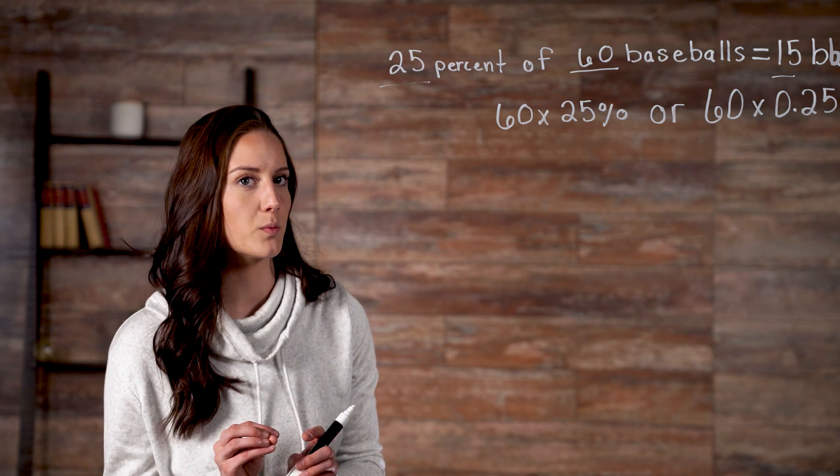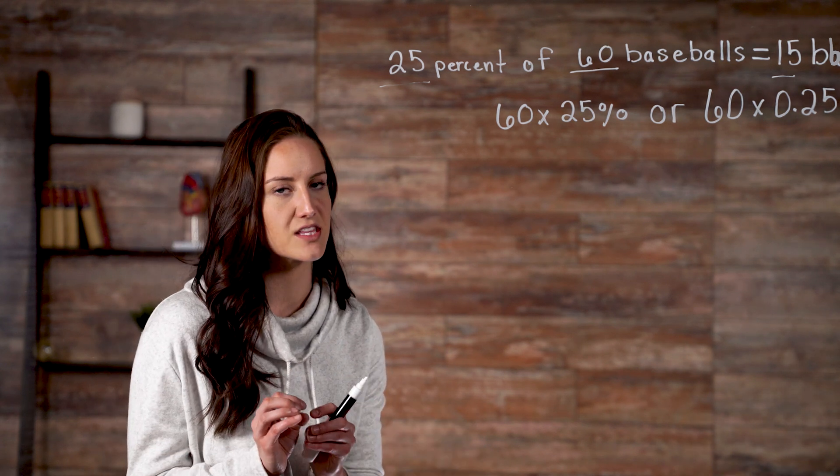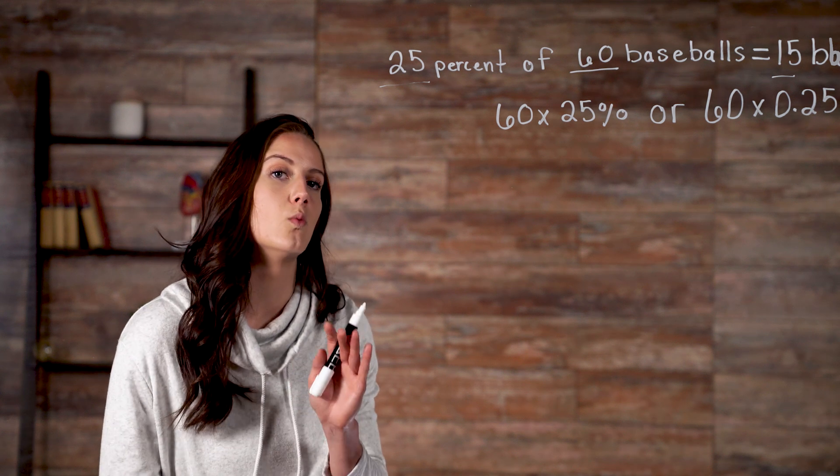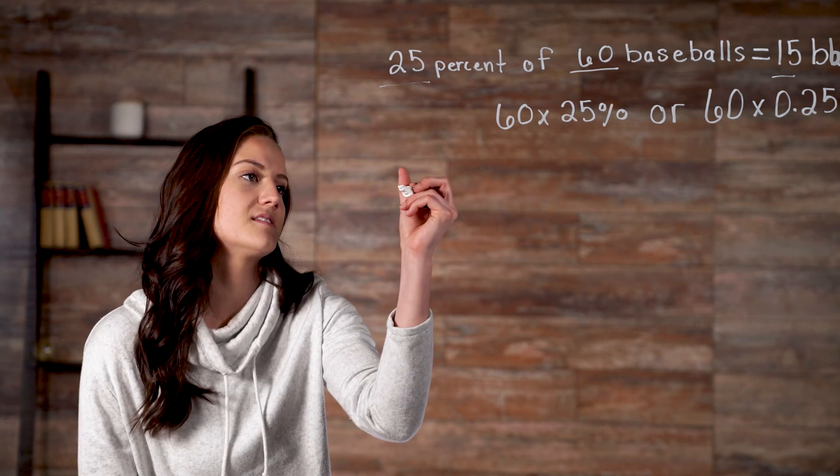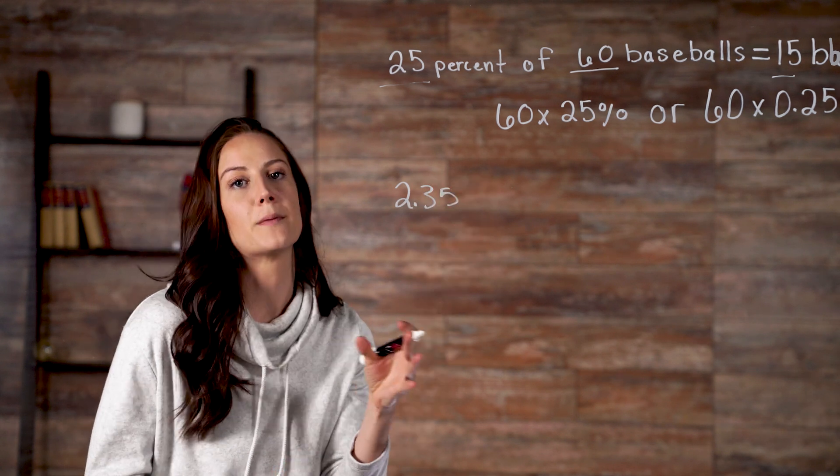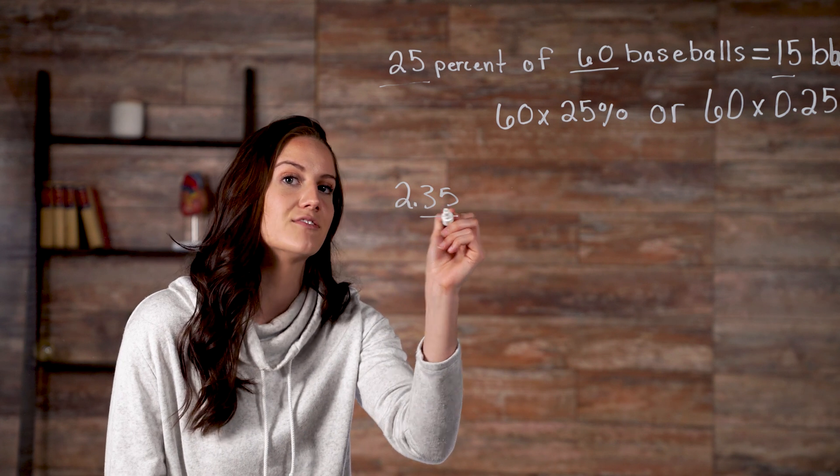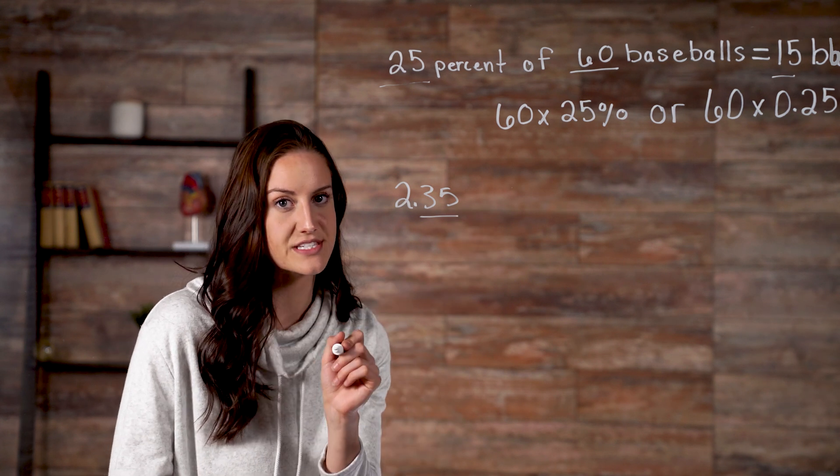Things become more confusing when people talk about a percentage point. A percentage point is the portion or unit of one percent. So that means that 2.35 would be a percentage point, since 0.35 is the unit of one percent.